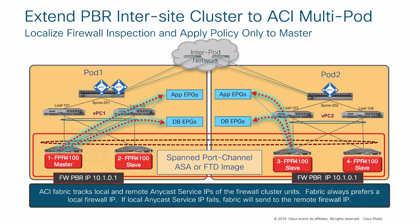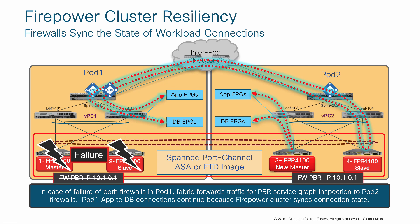This becomes important in case of failures. This solution has resiliency in multiple ways. Besides having port, switch, and device resiliency that we accomplish with clustering and VPCs, AnyCast service allows us to also use different pods for resiliency. If the inspection that was happening local to pod one on these firewalls — if those firewalls happen to fail — the fabric is smart enough to direct that traffic to any live firewalls in other pods. The communication between these two EPGs will be redirected to firewall 4, which will become the new owner of those connections, and we wouldn't see any disruption in service.